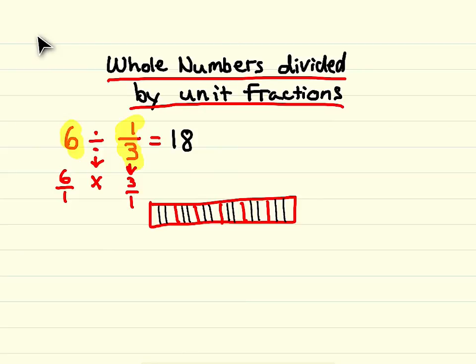To solve this problem, we just multiply across the top and multiply across the bottom. Six times three equals eighteen. One times one equals one. So eighteen over one is the same as eighteen.